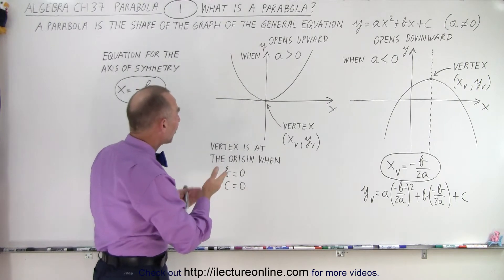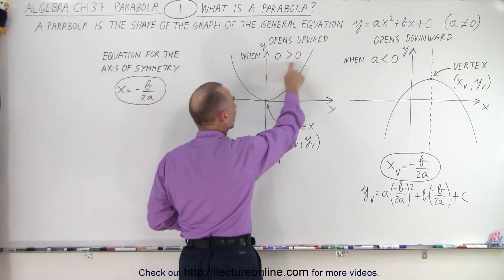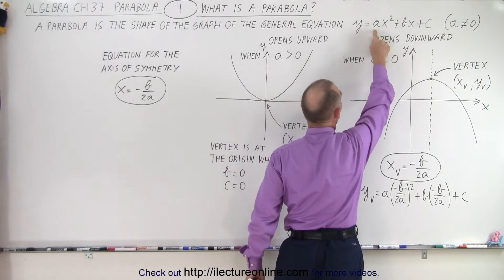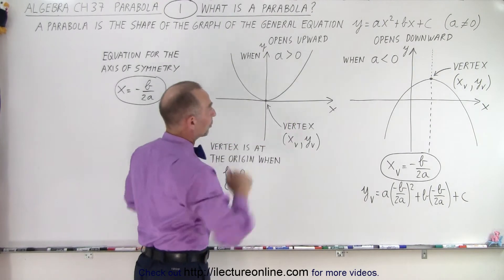Now, when do we have a parabola that opens upward? It is upward when a is greater than zero. In other words, when the coefficient in front of x squared is a positive number, the parabola opens upward.